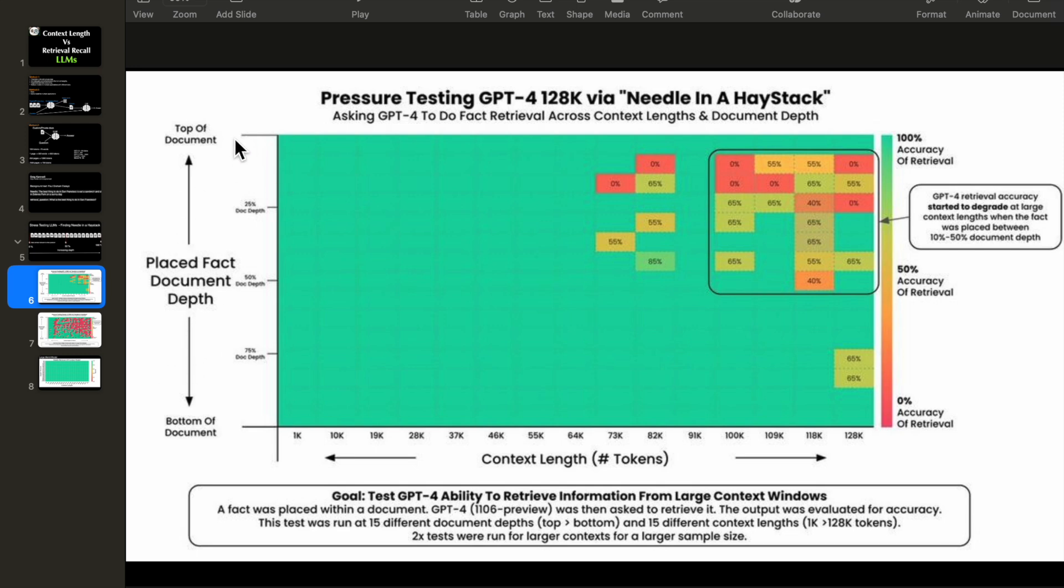Now here we have the depth where the needle is placed. For example, if the needle is placed at the very top of the text context, that would be 0% depth. This is at the very end of the text and this is somewhere in the middle. Now here we are seeing the retrieval score. So the green one meaning the model is able to retrieve correctly.